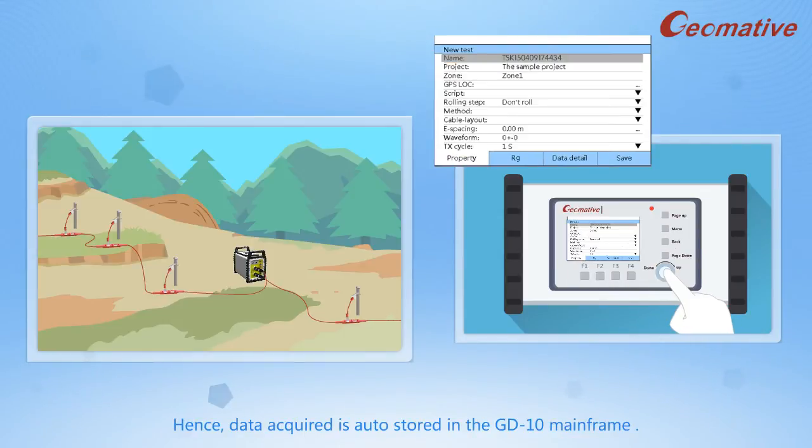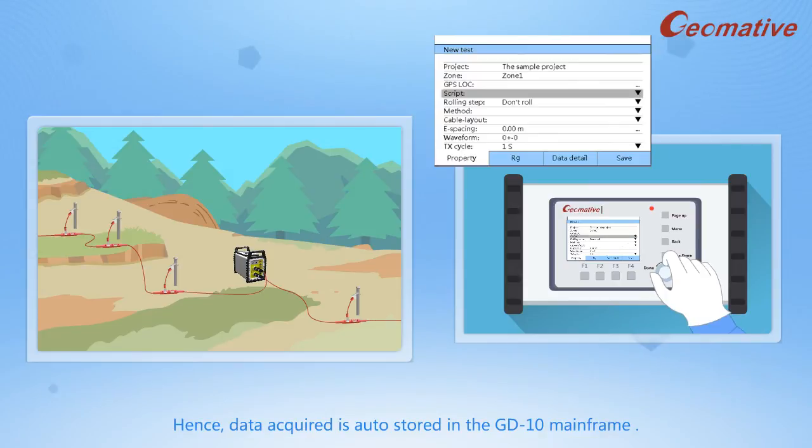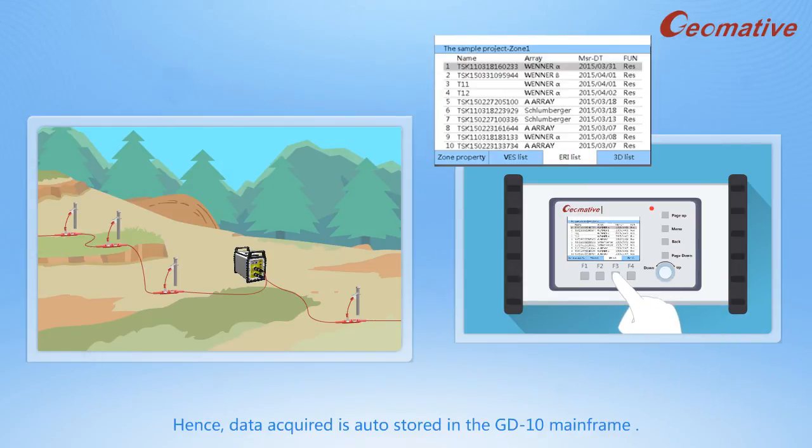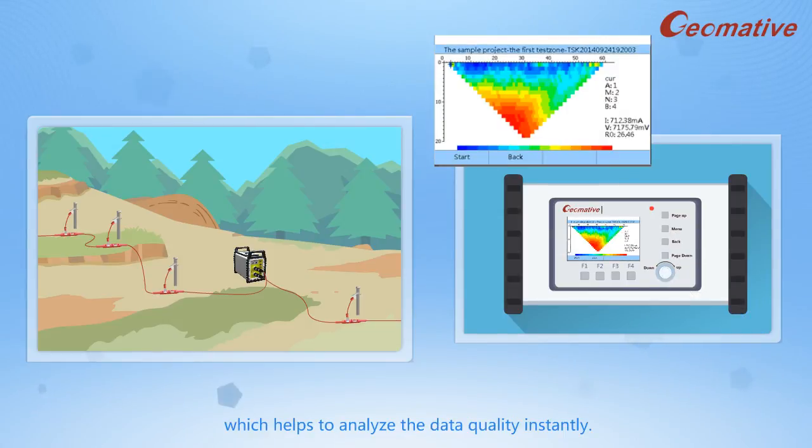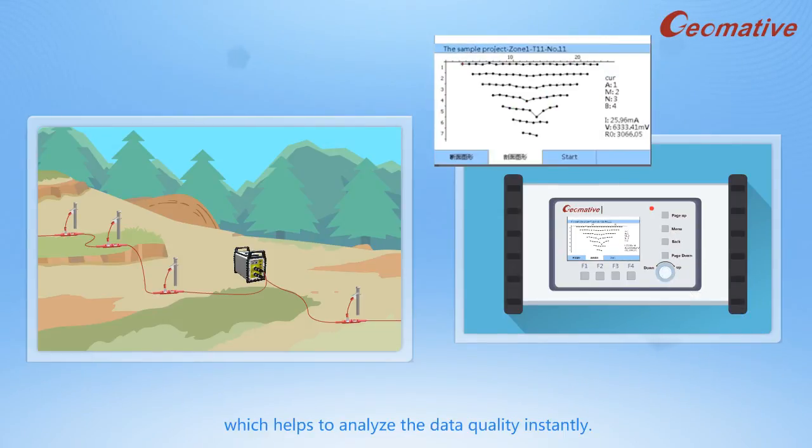Data acquired is auto-stored in the GD-10 mainframe. It can be viewed as data lists or graphs, which helps analyze data quality instantly.